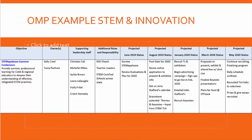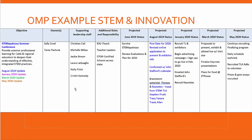Here's an example of an OMP for STEM and Innovation — specifically for a summer program called STEMapalooza. You can see where we outlined what STEMapalooza is, who the owners are, the lead and supporting staff, leadership supporting staff, and other people with roles and responsibilities who may not be county employees. Then we outlined the big rocks to complete in June, August, January, March, and May. Each month we check back against the OMP and do an update — I color-coded mine, with August updates in blue.